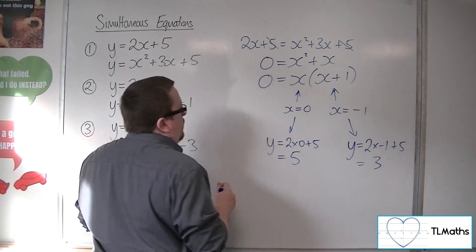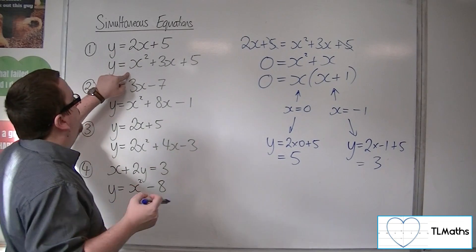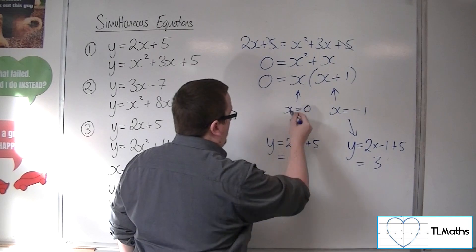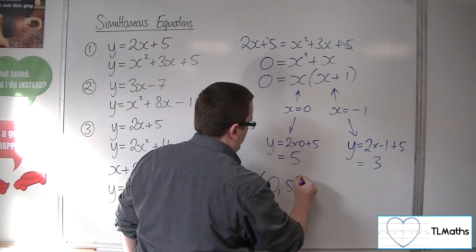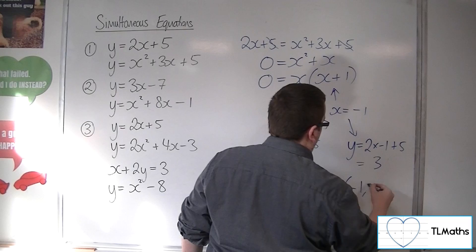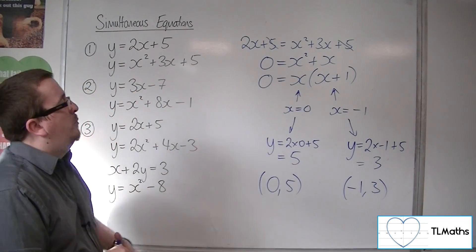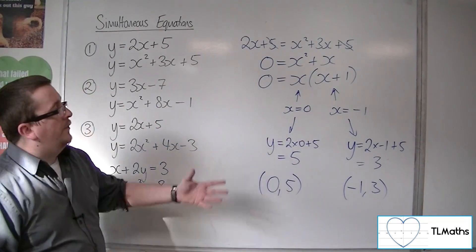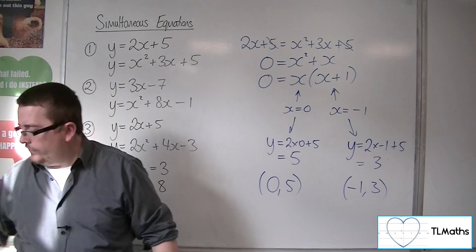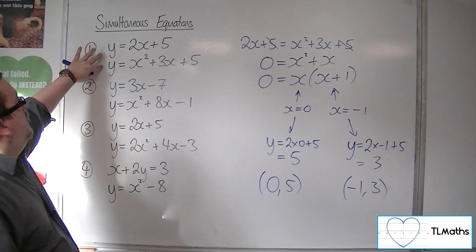So the linear equation — the line — and the quadratic — the parabola — intersect at (0, 5) and (−1, 3). Here is an example where we could use factorisation to solve the quadratic. So that's how we find the coordinates of where these first two intersect.